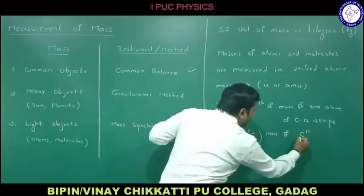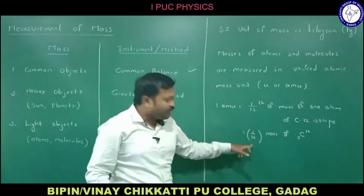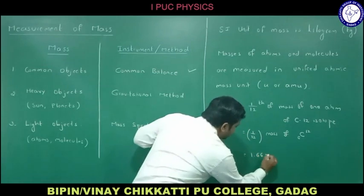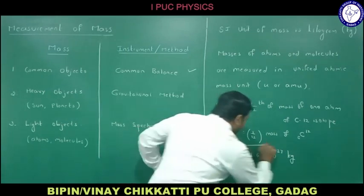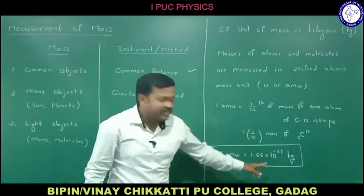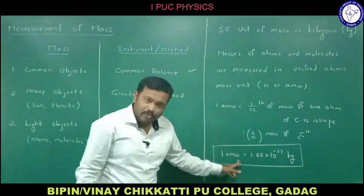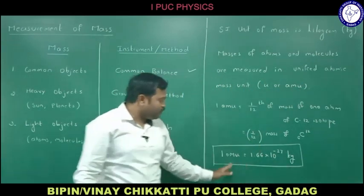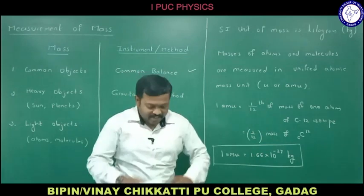One-twelfth of the mass of one atom of carbon-12 isotope works out to be 1.66 × 10⁻²⁷ kg. So 1 amu = 1.66 × 10⁻²⁷ kg. It can be denoted by u or amu — that is the unified atomic mass unit.